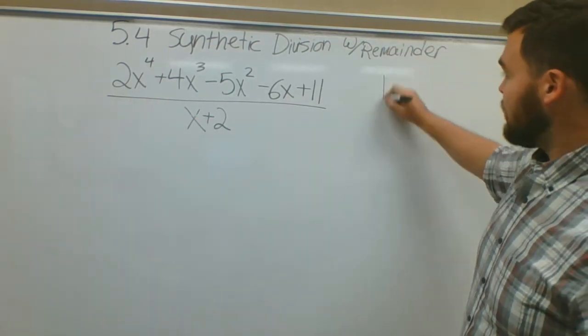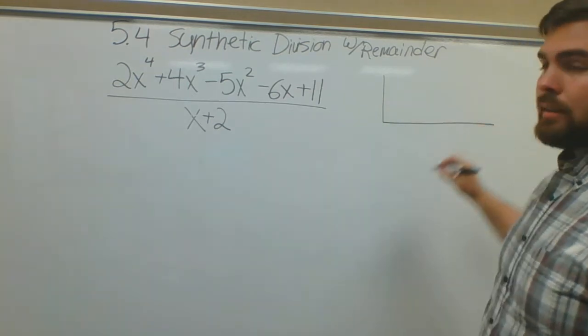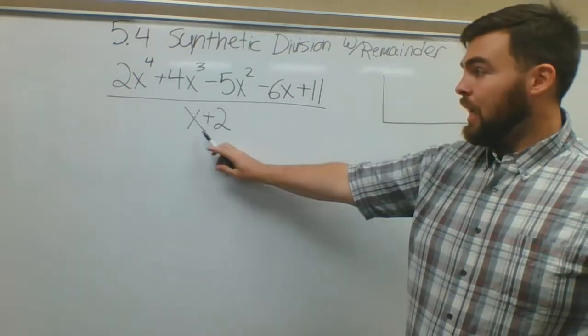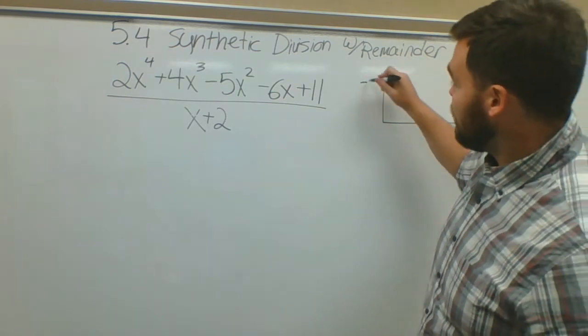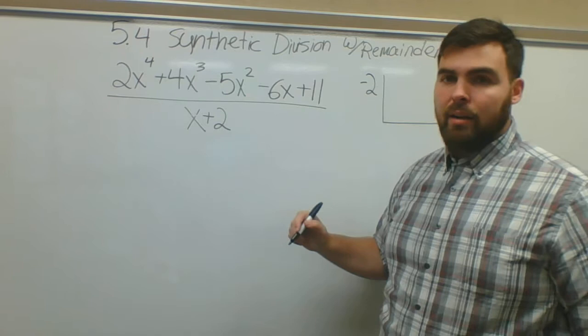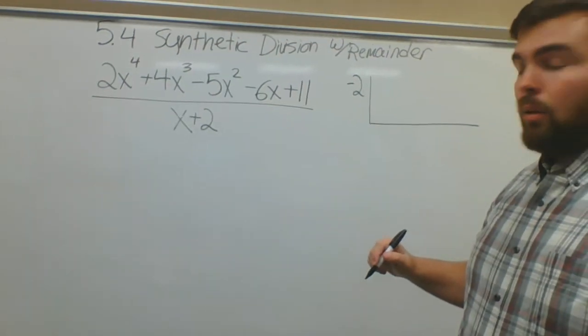Still gonna do synthetic division the same way. Like my box, I'll put in my k value. Again, it's coming from here. This 2 turns into negative 2. Change the sign, change the sign, don't forget that.